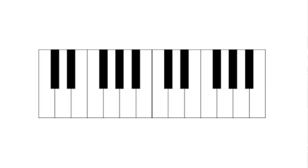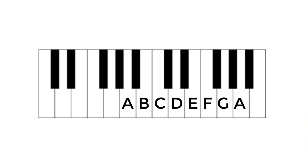All the white notes are called the natural notes and if you start on A you've got A, B, C, D, E, F, G, A. That is the musical alphabet — it just goes to G. Have a look at the B and the C and the E and the F. They're the only two white notes that don't have a black note in between them. This is absolutely crucial to know. Those black notes are the sharps and the flats — more on that later.